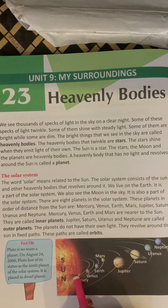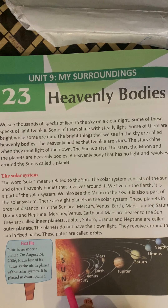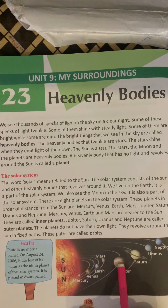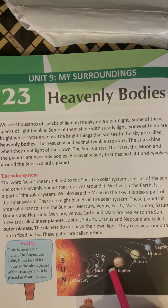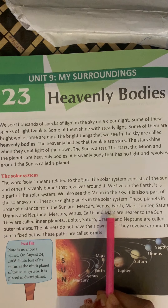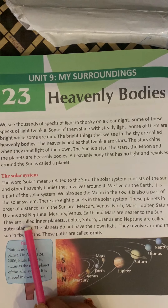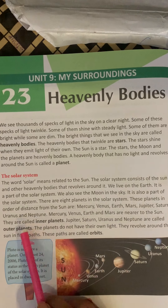These four planets which are near to the sun — Mercury, Venus, Earth and Mars — are known as inner planets. The other four planets which are far away from the sun — Jupiter, Saturn, Uranus and Neptune — are known as outer planets.